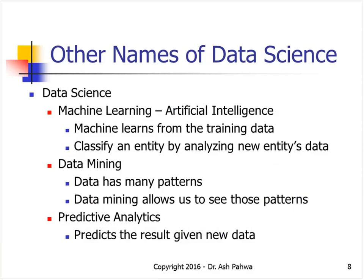Data science has different names. It is also called machine learning and artificial intelligence — basically the same thing. The fundamental techniques used in data science are the same as those used in machine learning. The term machine learning is primarily used in academia, while data mining refers to looking for patterns in data, and predictive analytics is used in the business world where we are trying to predict something.